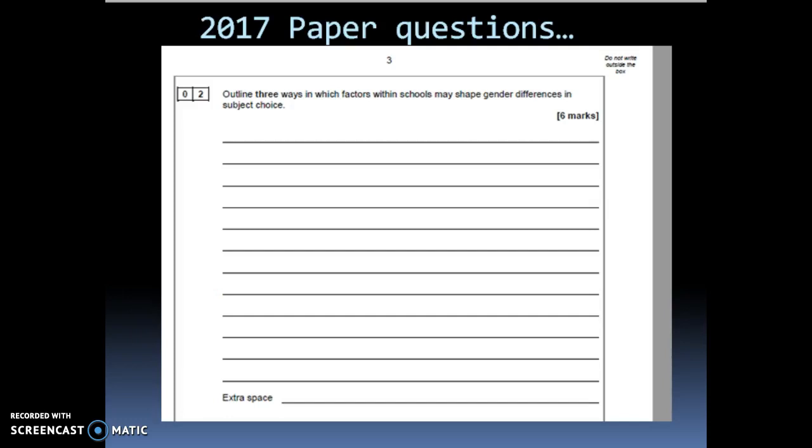The other question that was on this 2017 paper was, outline three ways in which factors within schools may shape gender differences in subject choice. And once again, just make sure that you are referring to the different hooks in your answer. So, the hooks here were the factors which were within school and factors could be things like significant people. So, teachers, pupils and peers. Also, classrooms or lessons and even resources. These are all different factors within the schools. And then you've got the gender difference hook. So, indicate are you talking about boys? Are you talking about girls? And then lastly, the subject choice. Which subjects are they attracted to or even put off? So, just double check that you are referring to each of those hooks in each of the points that you are making.